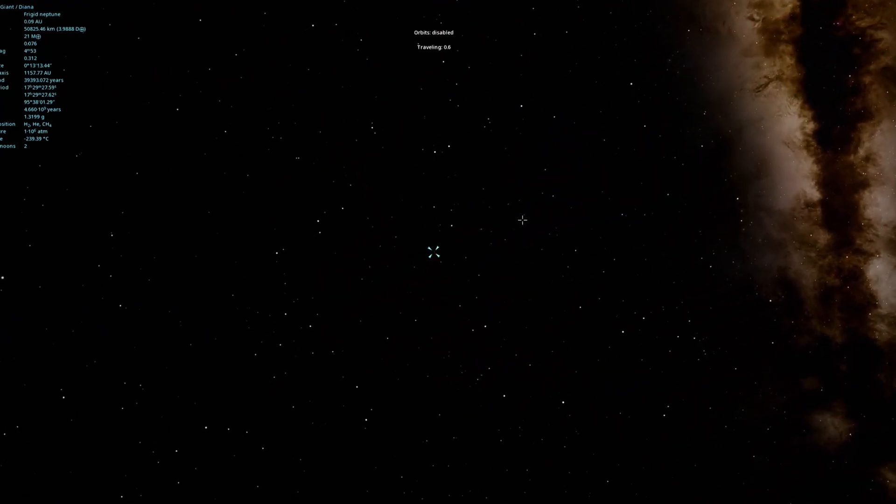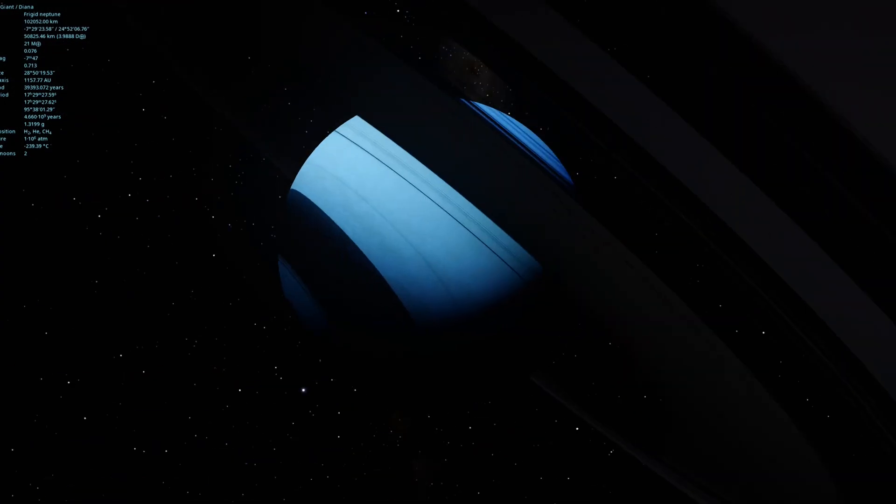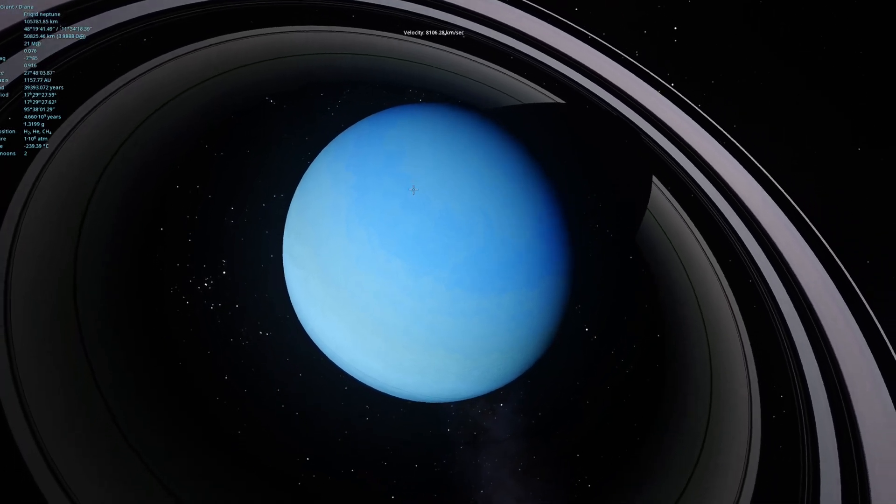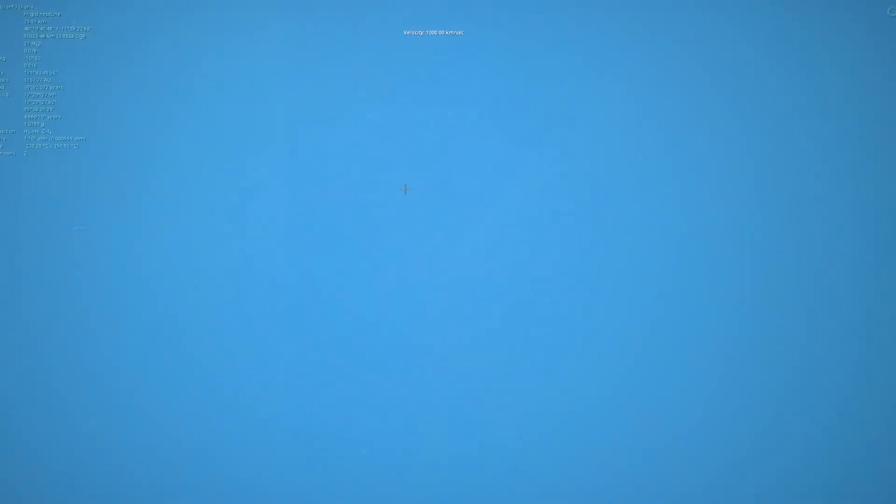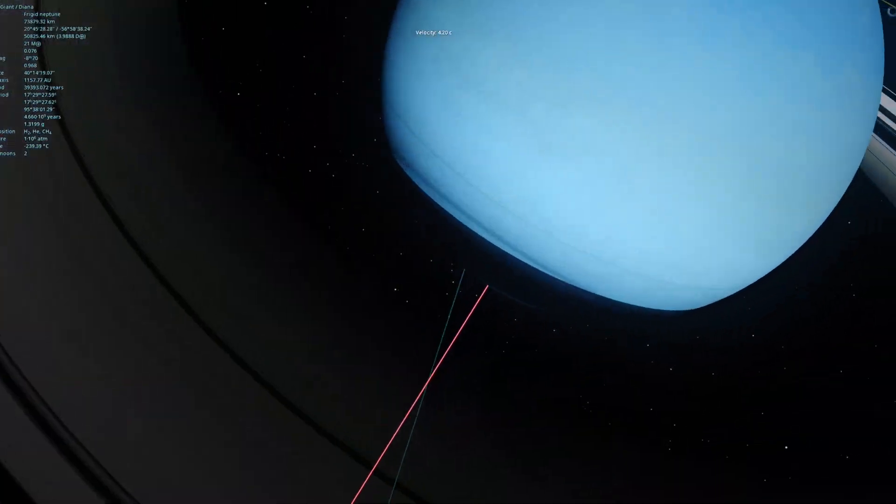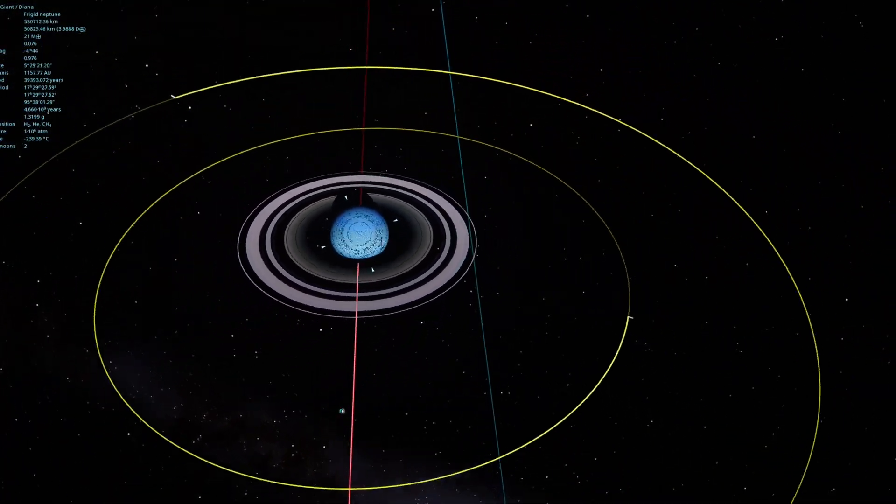of moons for us to look at. These colors are really awesome, and look at this giant ring system. Oh, it's kind of bugging out a little bit. That's fine. All right, here's moon number one, pretty